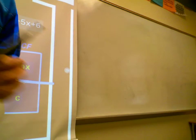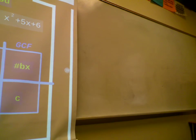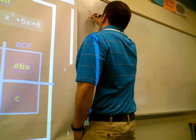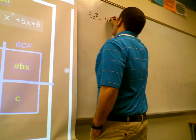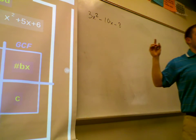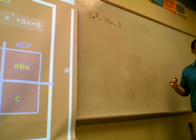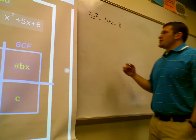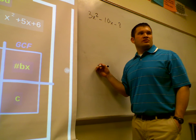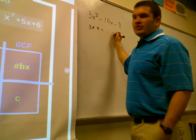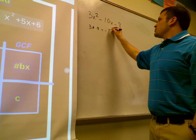Let's try another one. So this other one is 3x squared minus 10x minus 8. Is there a greatest common factor right now? No. So what's my first step? 3 times negative 8. What does that equal? Negative 24.